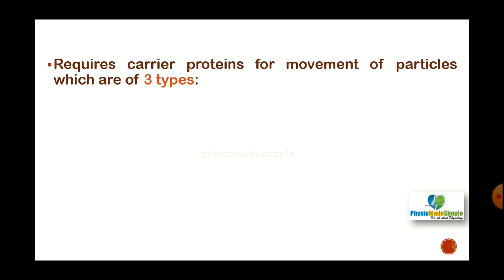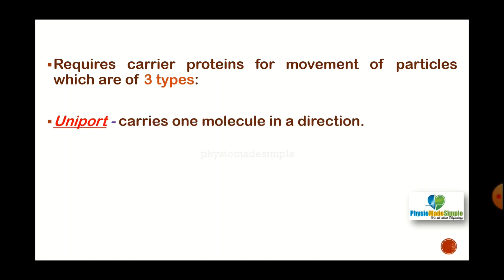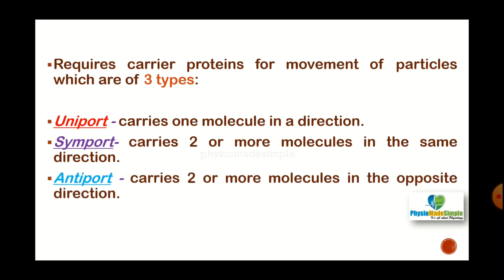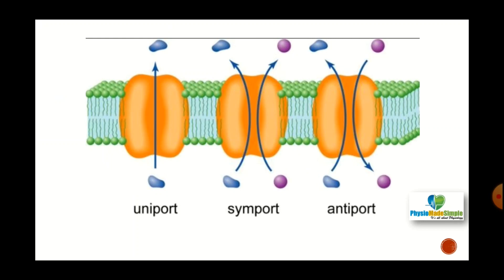Since it is against the electrochemical gradient, carrier proteins are essential for the movement of molecules. There are three types of carrier proteins: uniport, which carries one molecule in one direction; symport, which carries two or more molecules in the same direction; and antiport, which carries two or more molecules in the opposite direction. This picture shows the three types of carrier proteins.